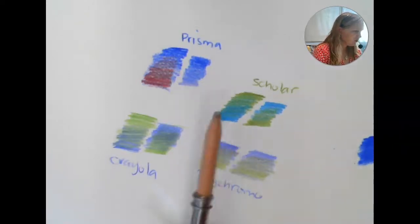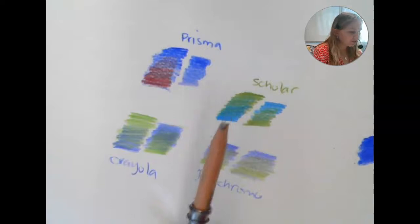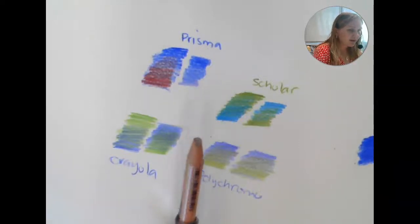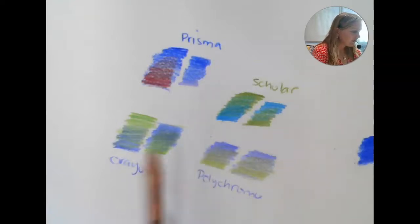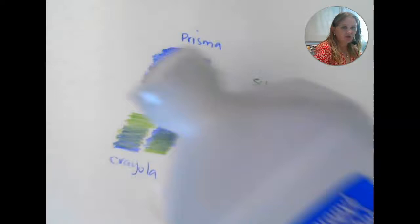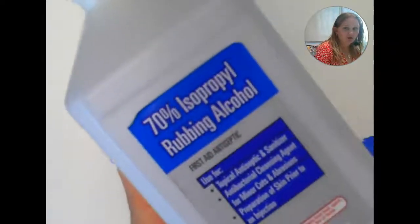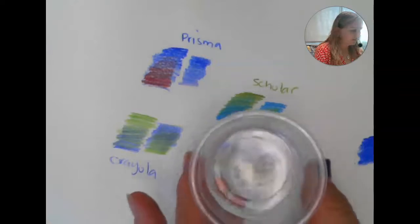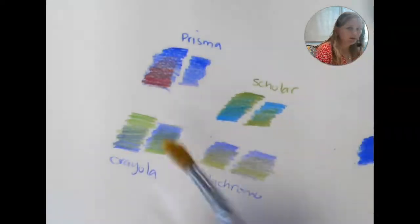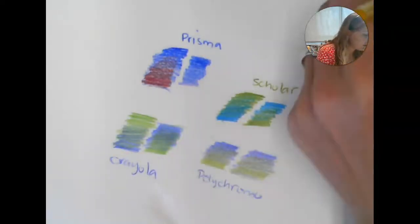So option number one, you can use a colorless blender. Now you may or may not have one of these with you. If you don't have one of course you can use a white pencil, but in my previous video I showed you how to use a colorless blender for doing that. Today I want to show you how to use two different solvents. So the first one I'm going to show you is something you probably have at home and this is just rubbing alcohol.